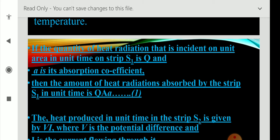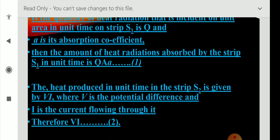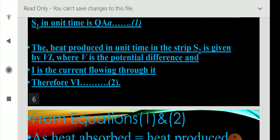Similarly, there is heat produced at S2. The heat produced in unit time in the strip S2 is considered as VI, where V is the potential difference and I is the current flowing through it. This we may consider as equation 2.